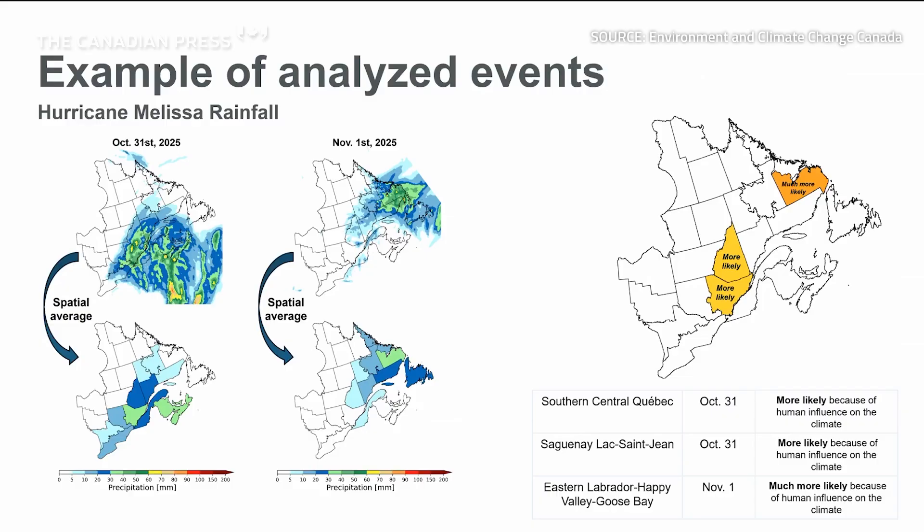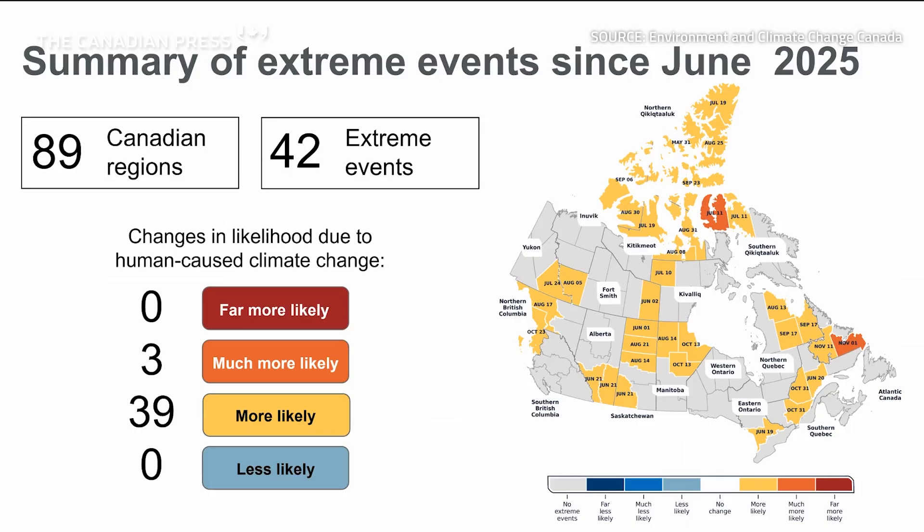The attribution analysis of these three events showed that the events in Quebec were more likely to occur due to human-caused climate change, while the Labrador event was much more likely to occur.